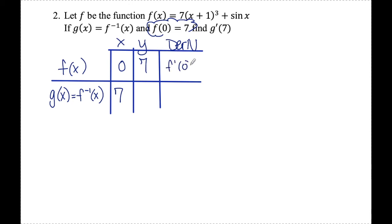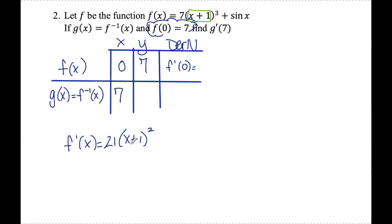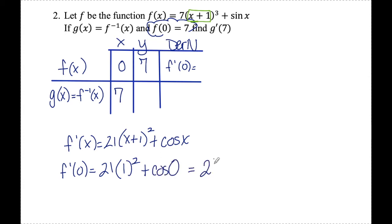Now I need to find f prime of 0. The derivative of the inverse at x equals 7 will be 1 over this derivative. For f(x) = 7(x+1)³ + sin x, I use chain rule: the derivative of 7(x+1)³ is 21(x+1)² times 1, plus the derivative of sine x is cosine x. Evaluating at x equals 0: 21 times (0+1)², which is 21 times 1, plus cosine 0, which is 1, giving 22. So f prime of 0 is 22, meaning g prime of 7 is 1 over 22.